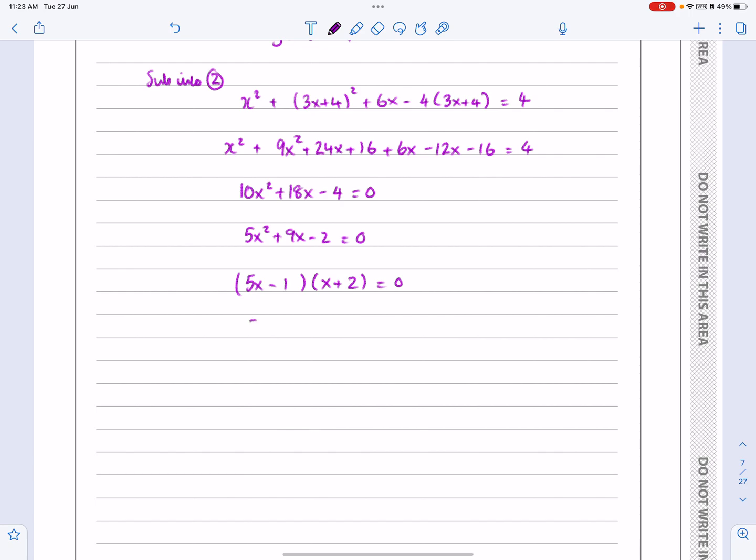So that's going to give me 5x - 1 = 0, or x + 2 = 0, which gives me my two solutions: x = 1/5 or x = -2.